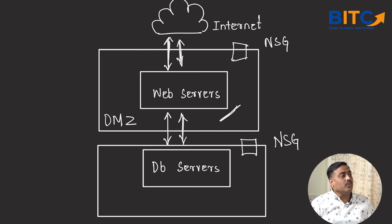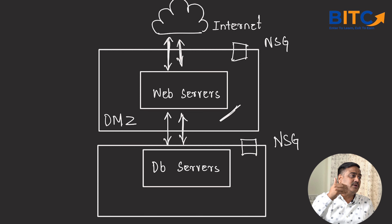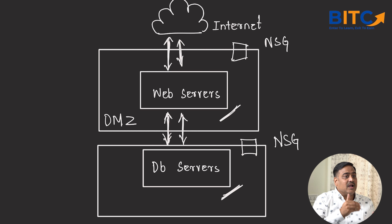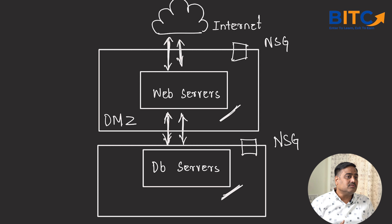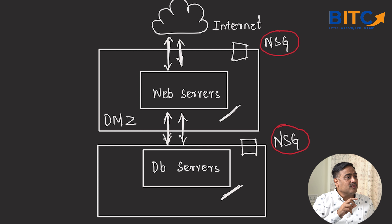Certain workloads should not be accessible to the internet at all, but should be accessible to other virtual machines within the same network. For example, a web server should be accessible to the internet, but a database server shouldn't — it should only be accessible to the application running on the web server. We need different security settings for each, achieved by introducing NSGs or firewalls at the subnet level.